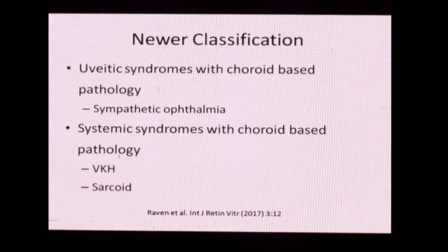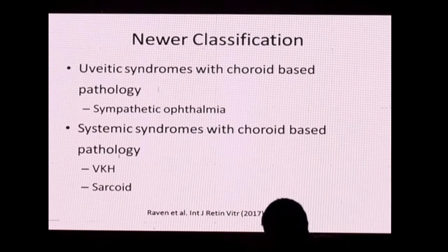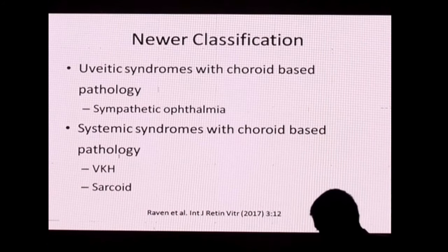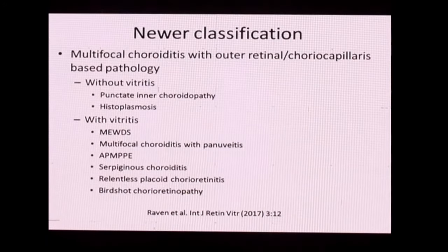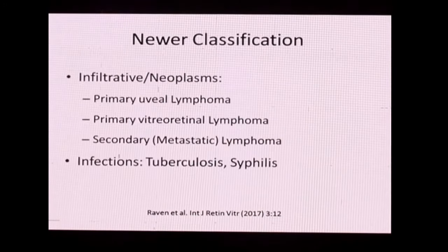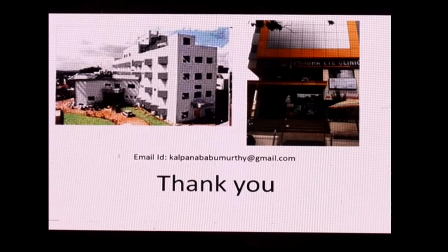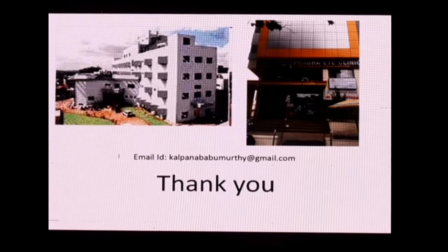Based on better understanding of the pathology, a newer classification is being proposed: uveitic syndromes with choroidal-based pathology such as sympathetic ophthalmia, and systemic syndromes with choroidal-based pathology like VKH or sarcoid. Depending on location — outer retinal or choriocapillary-based — and presence of vitritis, entities like PIC, histoplasmosis, and others are categorized. Other mimickers include neoplasms and infections. We have a long way to go, but this has paved a path to better understand these diseases.